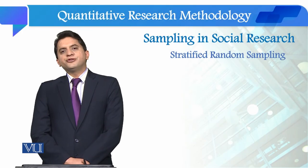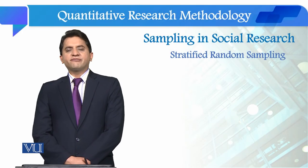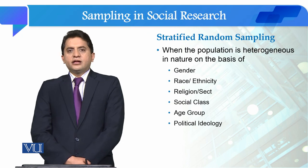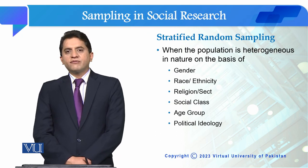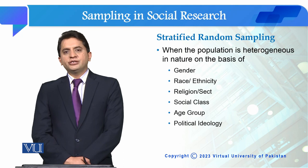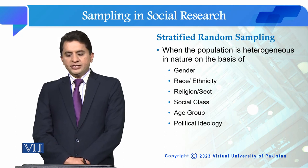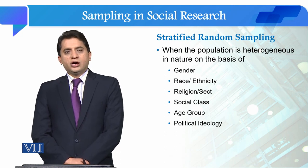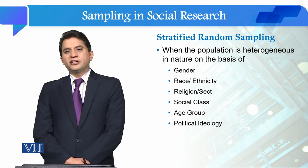Students, in this module we will talk about Stratified Random Sampling. Stratified Random Sampling is used when the population is heterogeneous on the basis of gender, race, ethnicity, religion or sect, social class, age group, or political ideology.